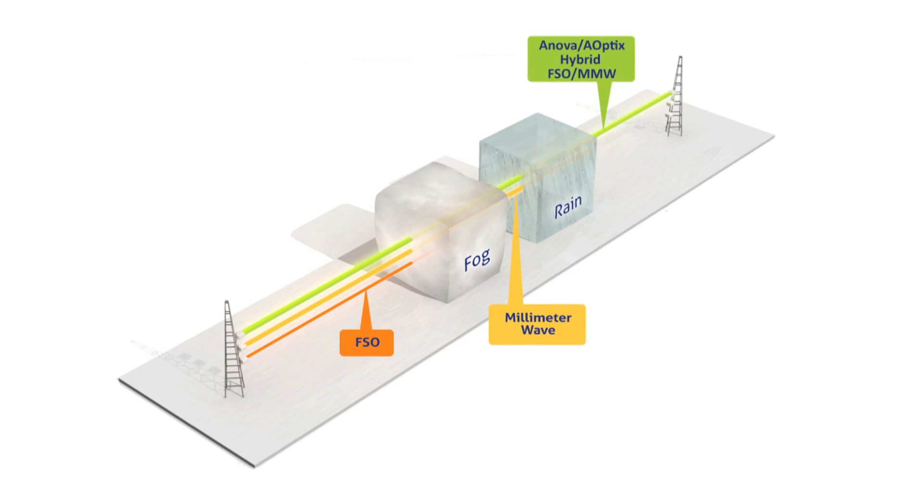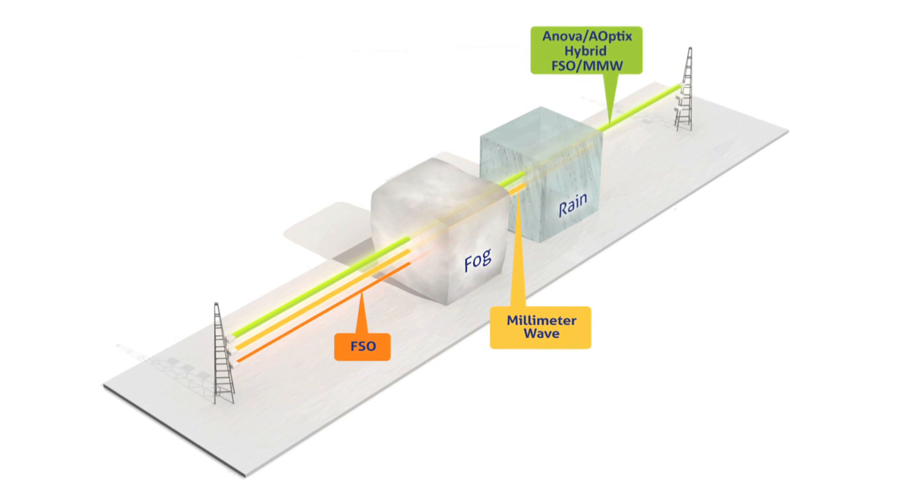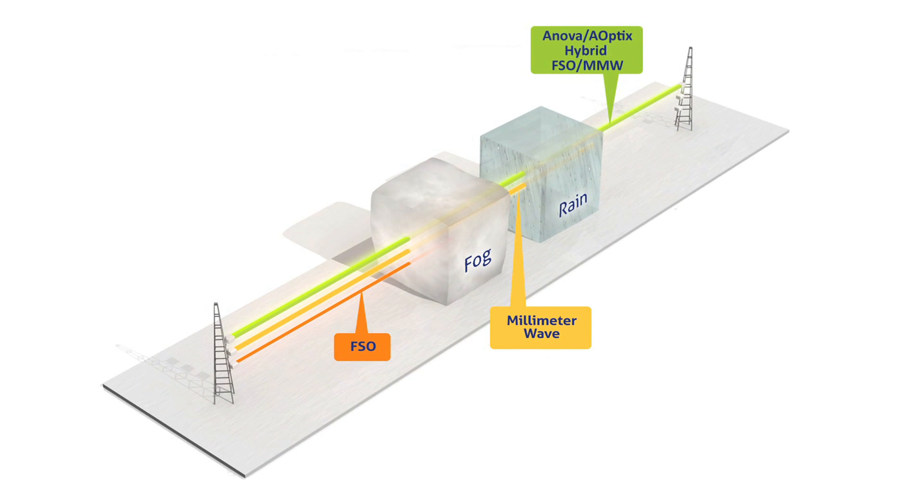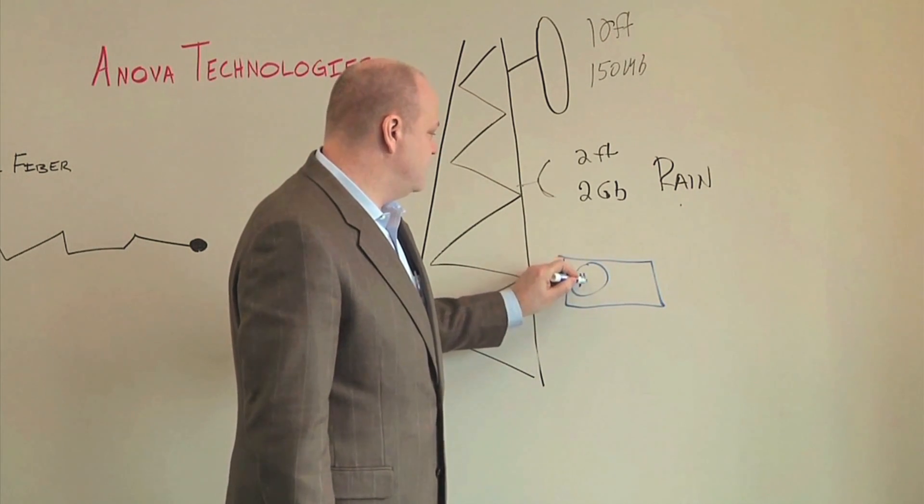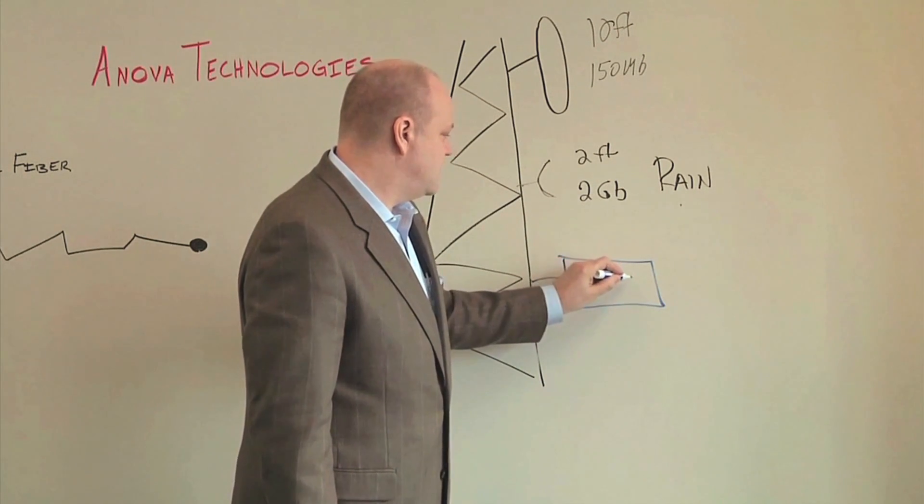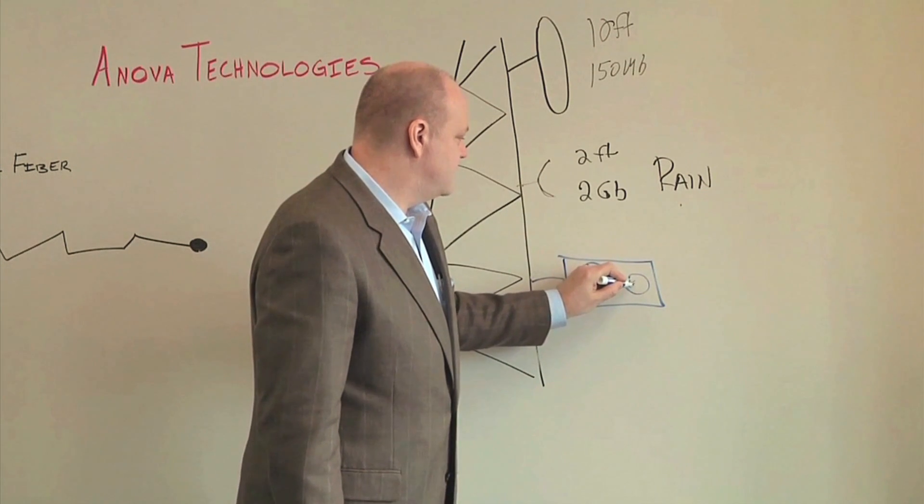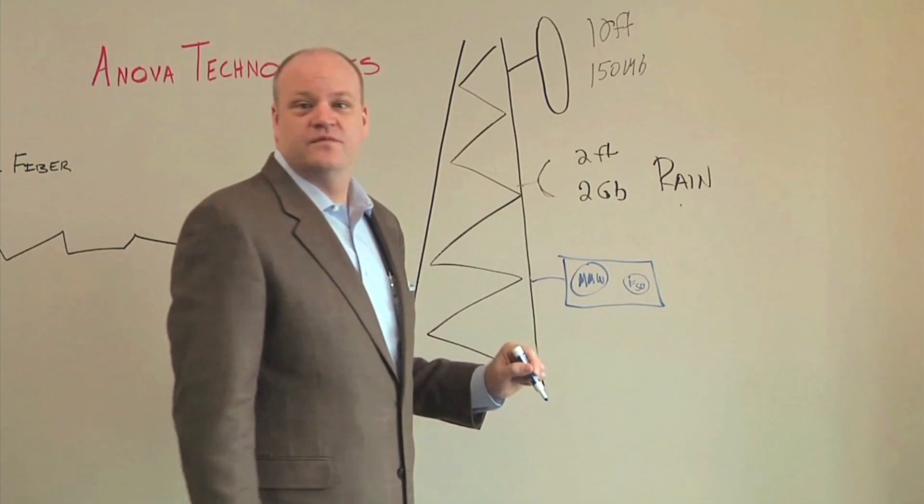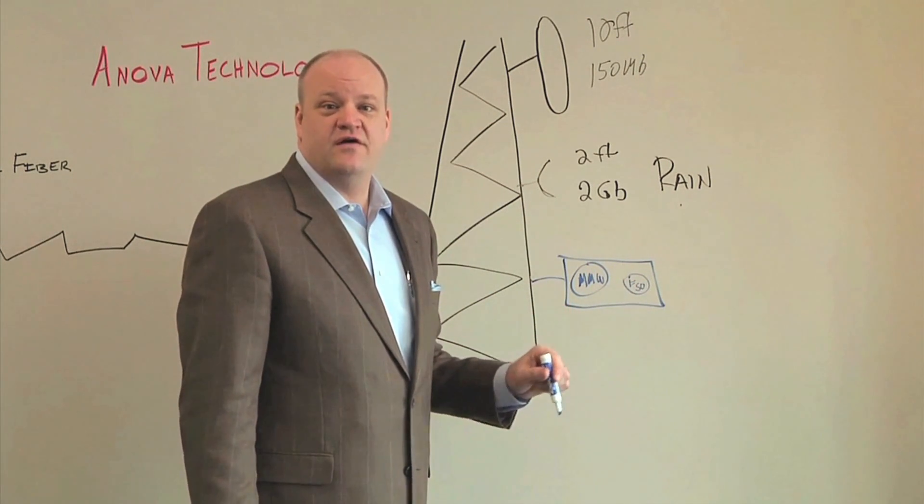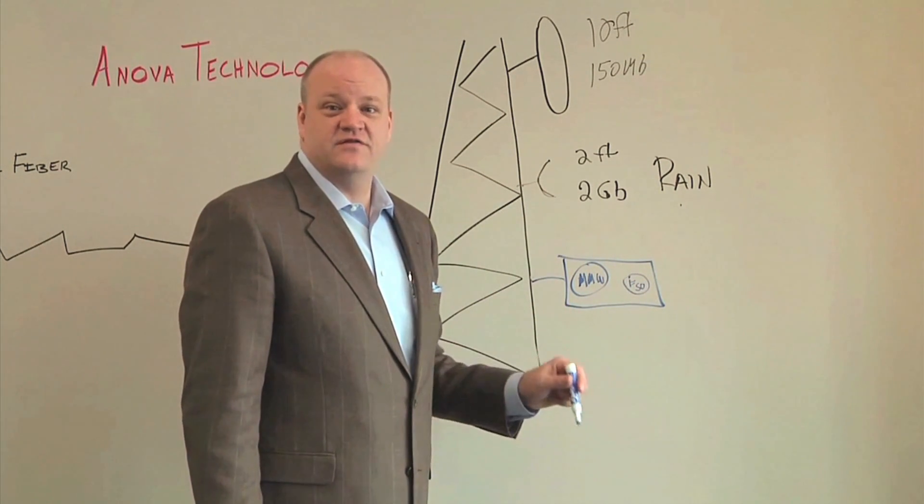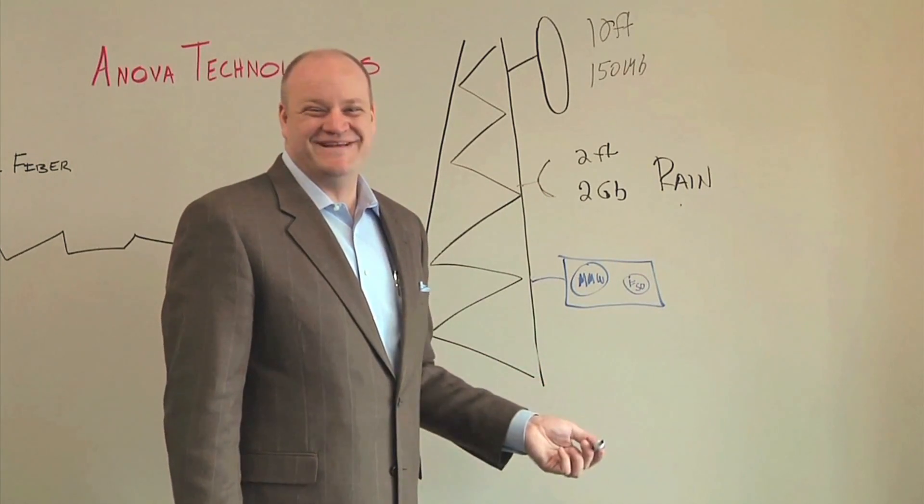What did ANOVA do? We created a custom technology of free space optics combined with legacy millimeter wave. So in a self-contained unit, you have the millimeter wave dish and you have the FSO aperture. What this gives you is a perfect marriage of mutually exclusive attenuating transmissions. What does that mean?